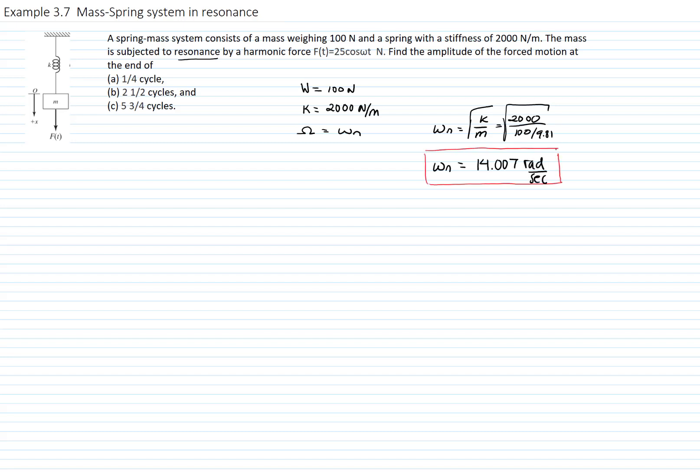Since we know the system is in resonance, we know the shape of our response, which is equal to x₀ cosine ωₙt plus v₀ over ωₙ times sine ωₙt plus static deflection times ωₙt divided by 2, sine ωₙt.